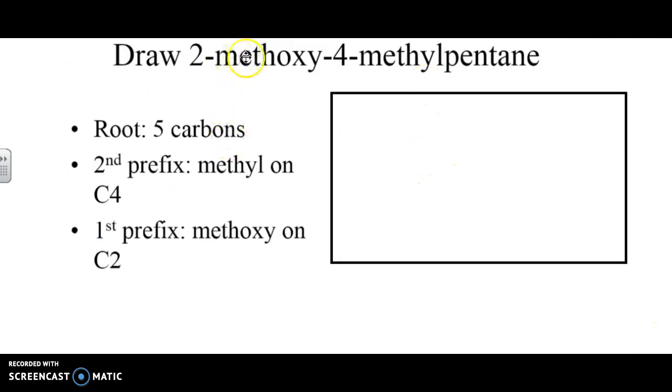So now, it's asking us to draw out two-methoxy-four-methylpentane. So let's work backwards. We've got our pentane chain. So therefore, we draw a five-carbon chain. It's telling us at spot number four, we've got a methyl. It's telling us at spot two, we've got a methoxy. So by definition, because we've got an oxy, we've got an oxygen here, and then whatever this is. So CH3.